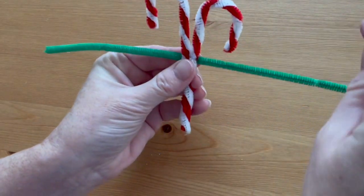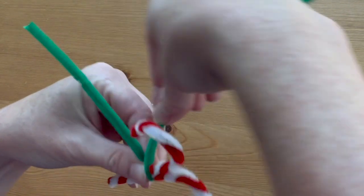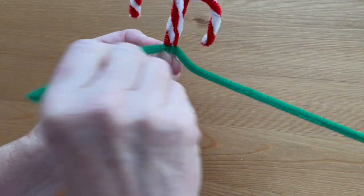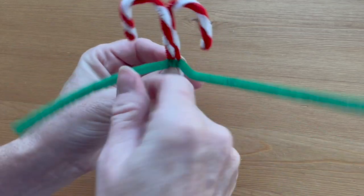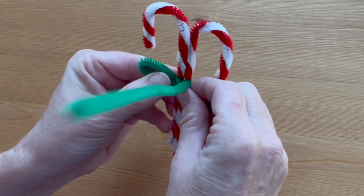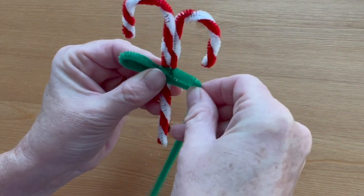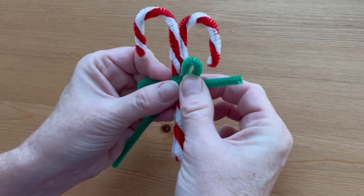Hold the candy canes back to back and then hold the green pipe cleaner behind them, leaving one-third on the left side. Then wrap the long end around the candy canes two or three times. Form both ends into ovals for the bow shape.